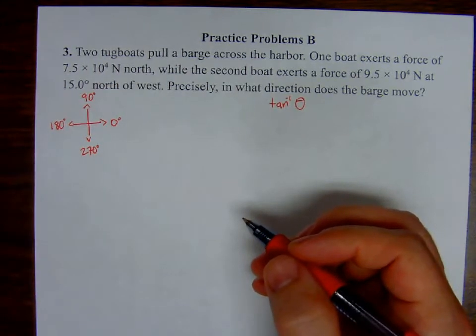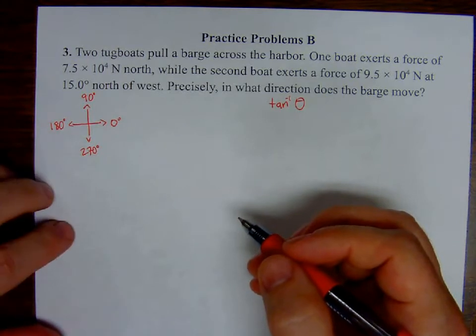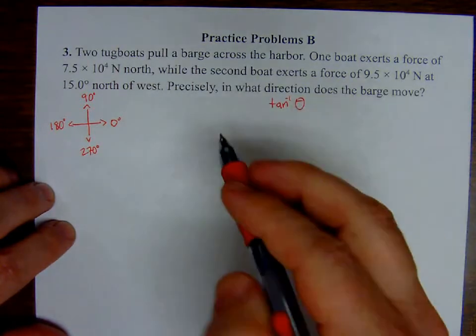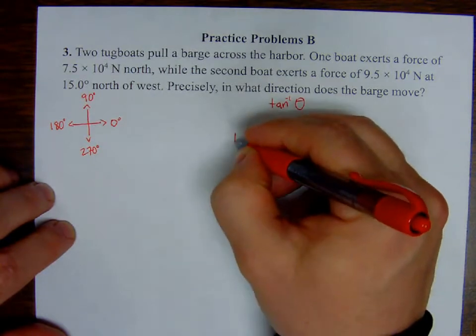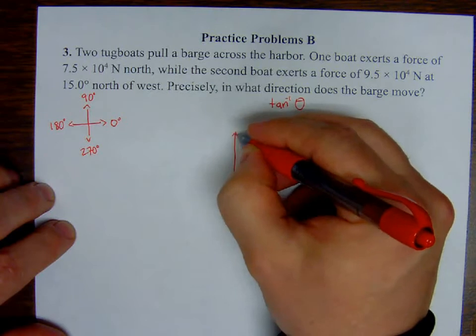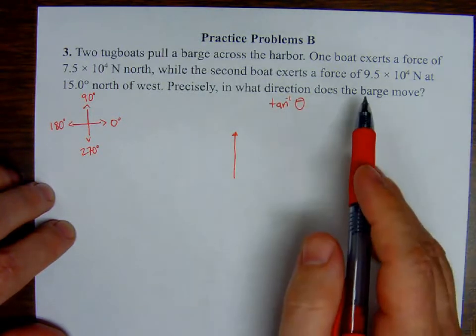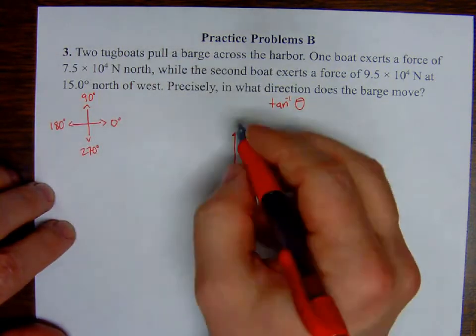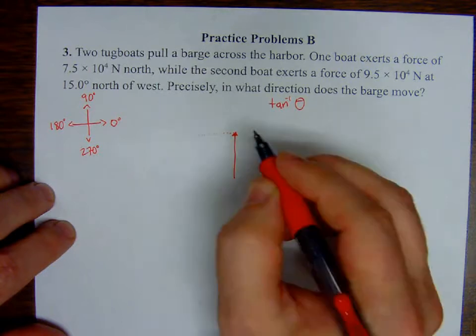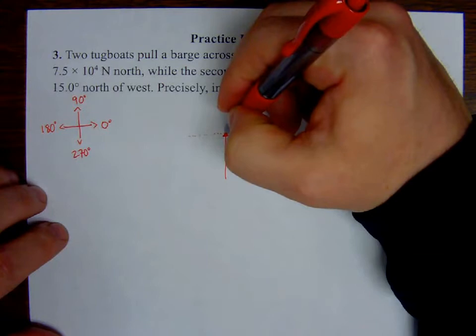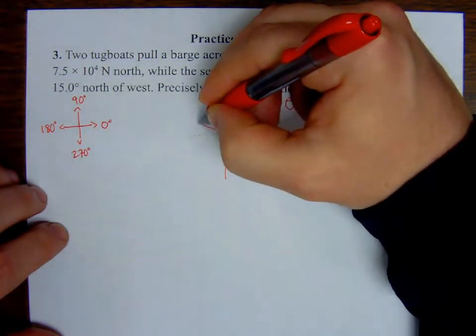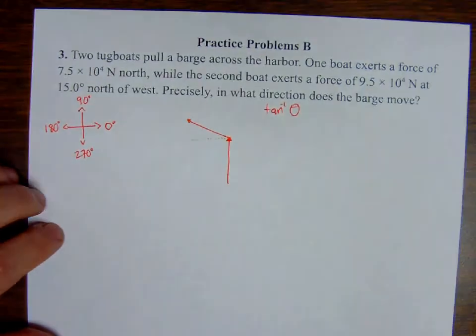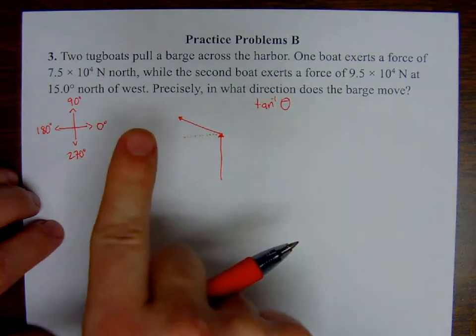Okay, so first thing I want to do, let's draw our diagram. One boat exerts a force north, okay? Got it. And the other boat, the other tugboat, is exerting a force at 15 degrees north of west. So that would be west, and this is going to be about 15 degrees north of west. Don't worry too much if it's not exactly 15 degrees. Again, north of west, right? So here's north, here's west. So north of west is moving up toward that north. So this angle right here is actually going to be 15 degrees.